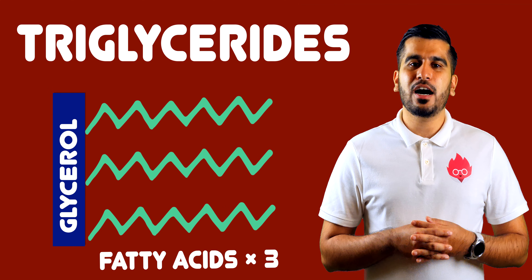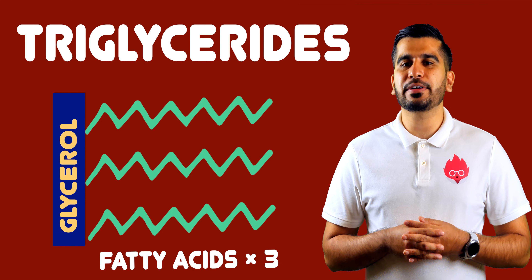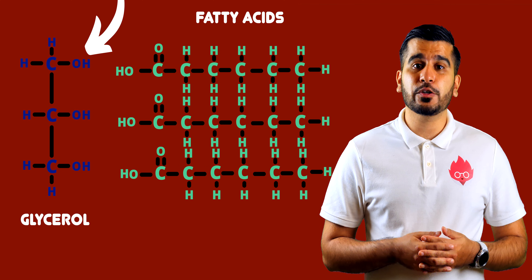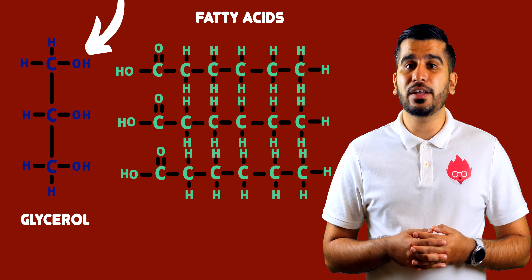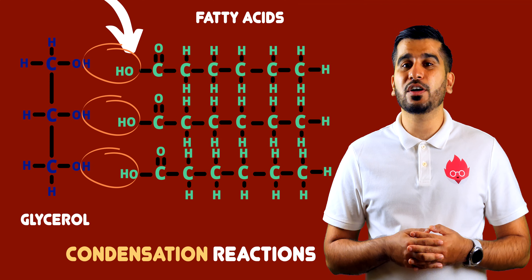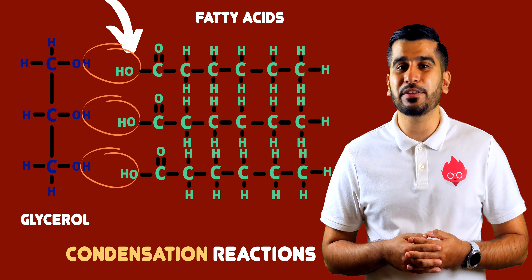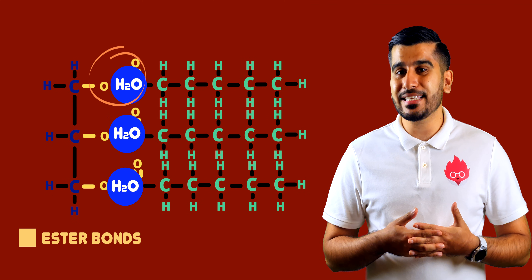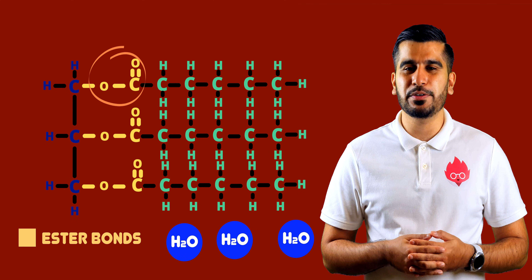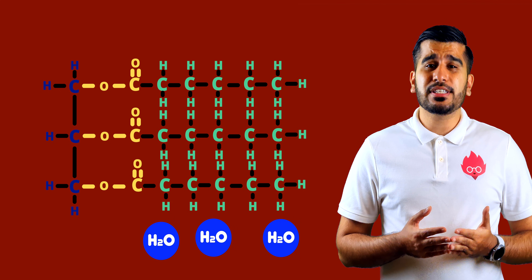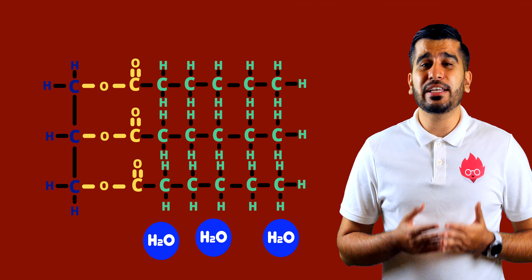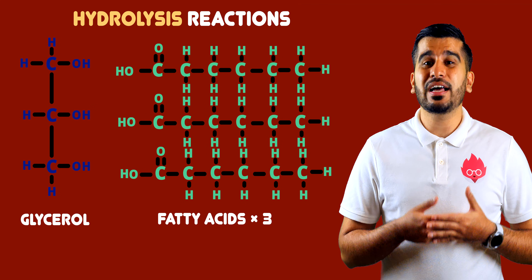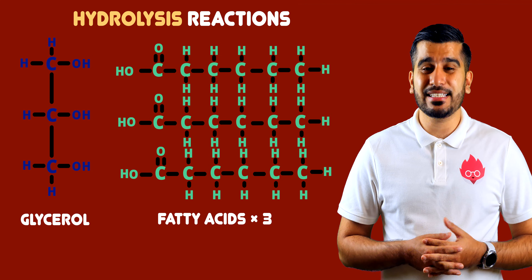Triglycerides are made from one glycerol and three fatty acids. The hydroxyl group on the glycerol undergoes a condensation reaction with the carboxyl group on the fatty acid. This forms three ester bonds and three water molecules are removed. These bonds can be broken down in hydrolysis reactions, which would produce glycerol and three fatty acids.